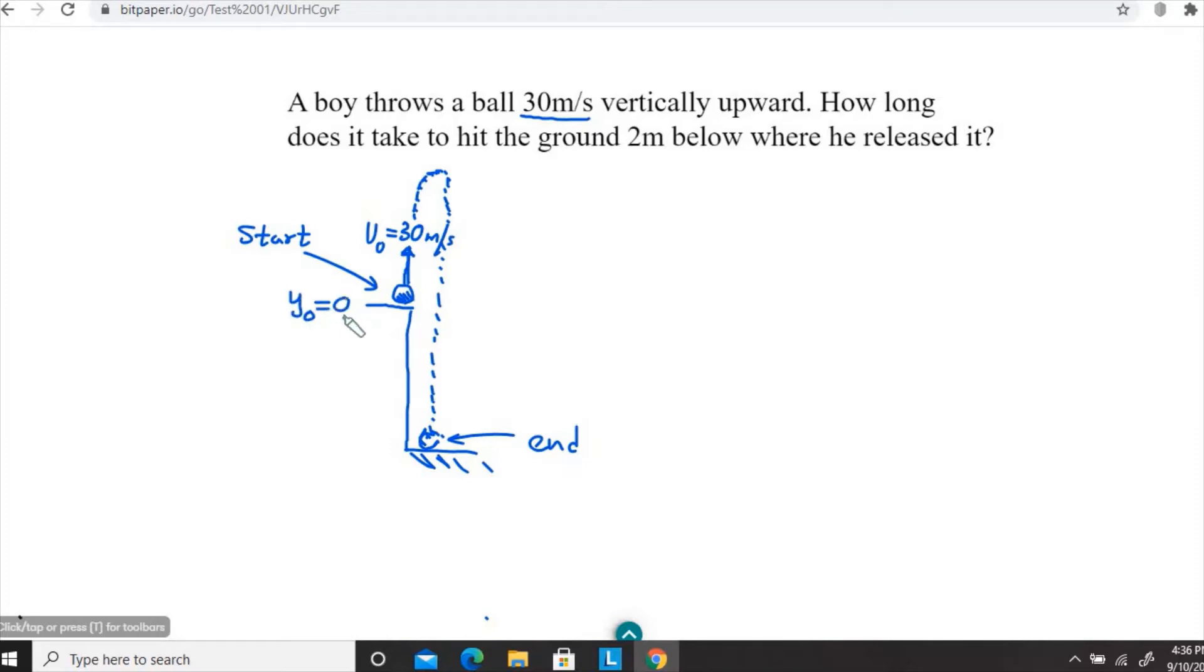If we consider this as our reference level, this is two meters below the reference level. Since we consider this position as a vector, we need to include the sign. Two meters below means there's a negative sign.